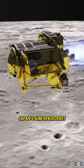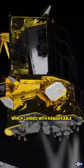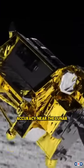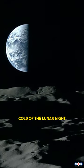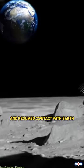In a surprising and impressive feat, Japan's SLIM spacecraft, which landed with remarkable accuracy near the lunar equator in January, has endured the extreme cold of the lunar night and resumed contact with Earth.